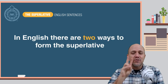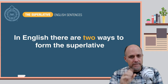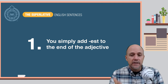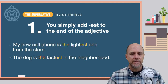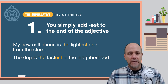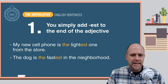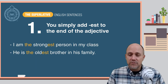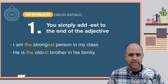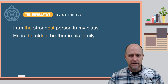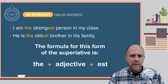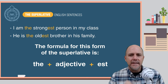In English, there are two different ways to form the superlative. The first way, you simply add -est to the end of the adjective. Here are some examples: 'My new cell phone is the lightest one from the store.' 'The dog is the fastest in the neighborhood.' 'I am the strongest person in my class.' 'He is the oldest brother in his family.' The formula is: the + adjective + est.